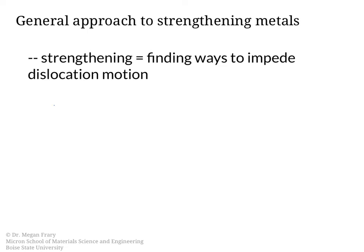Some of the ways that we can do this are through strain hardening — this is the one I will talk about today. This is essentially just increasing the dislocation density so that you have more dislocation-dislocation interactions, which then requires more stress to continue deforming.